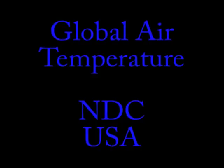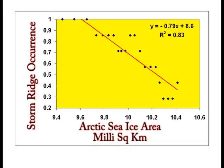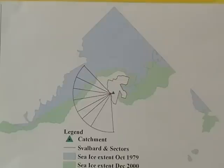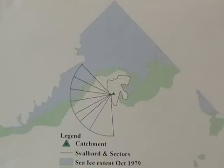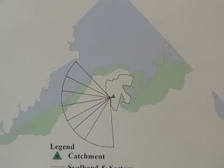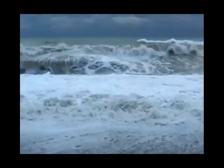Numeric analysis proved that the reduction of Arctic sea ice area increases storm ridge occurrence. When the sea ice area reduces to 9.7 million square kilometers or less, the ridge will certainly be formed. The National Snow and Ice Data Center also provides monthly shapefiles of Arctic sea ice extent. The distance of the Arctic sea ice border from the catchment was measured through these shapefiles. At least 100 km of free ocean distance is necessary for waves to form and be strong enough to create ridges — we call it effective sea ice distance.